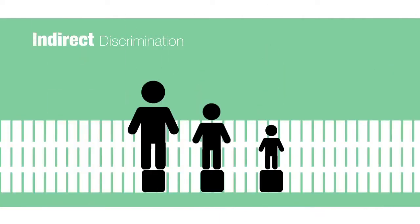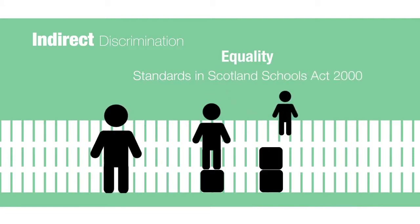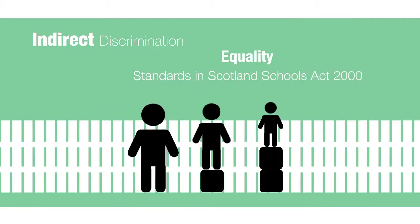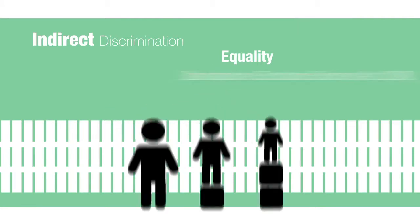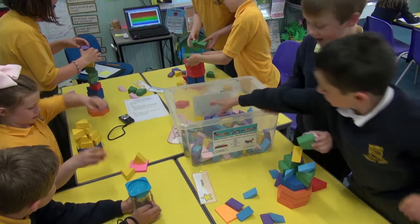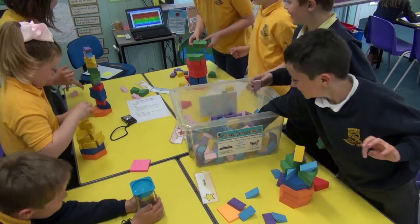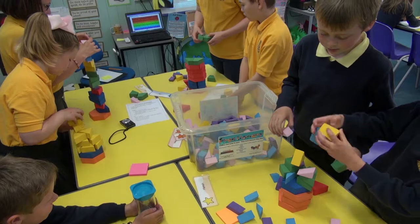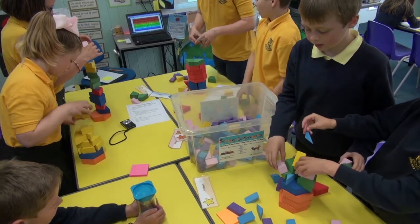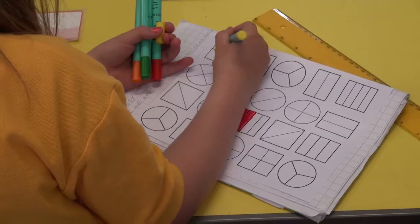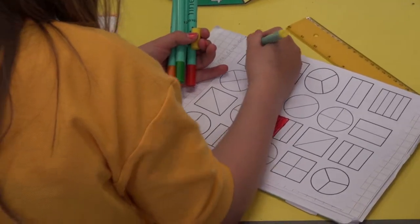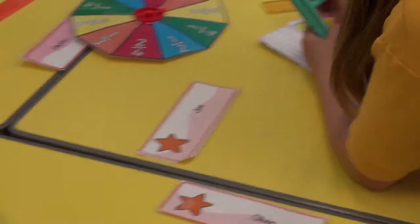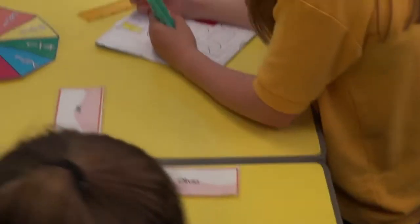Indirect discrimination occurs when we treat everyone the same and fail to take individual needs into consideration. Every child of school age has the right to school education, or to education by virtue of arrangements made or entered into by the Education Authority. Pupils are to be educated, as far as it is reasonable, in accordance with the wishes of their parents.